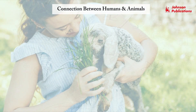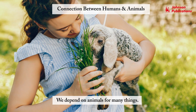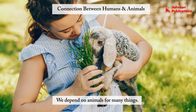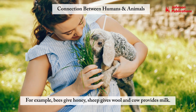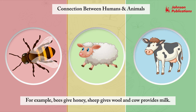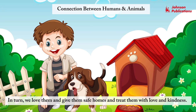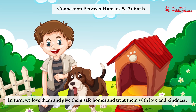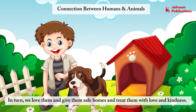Connection between humans and animals. We depend on animals for many things. For example, bees give honey, sheep give wool, and cows provide milk. In turn, we love them and give them safe homes, and treat them with love and kindness.